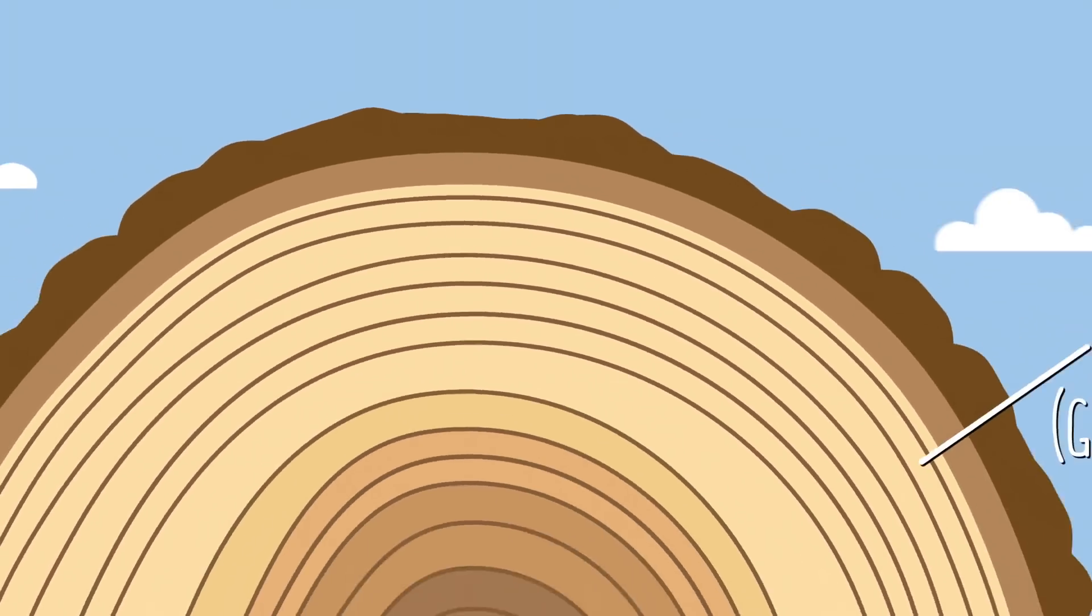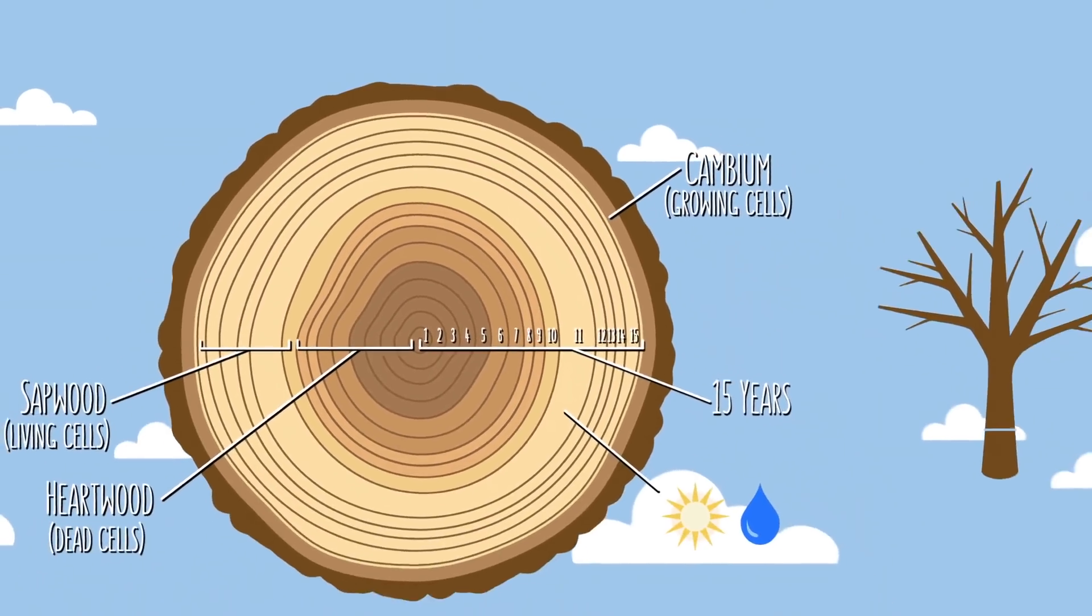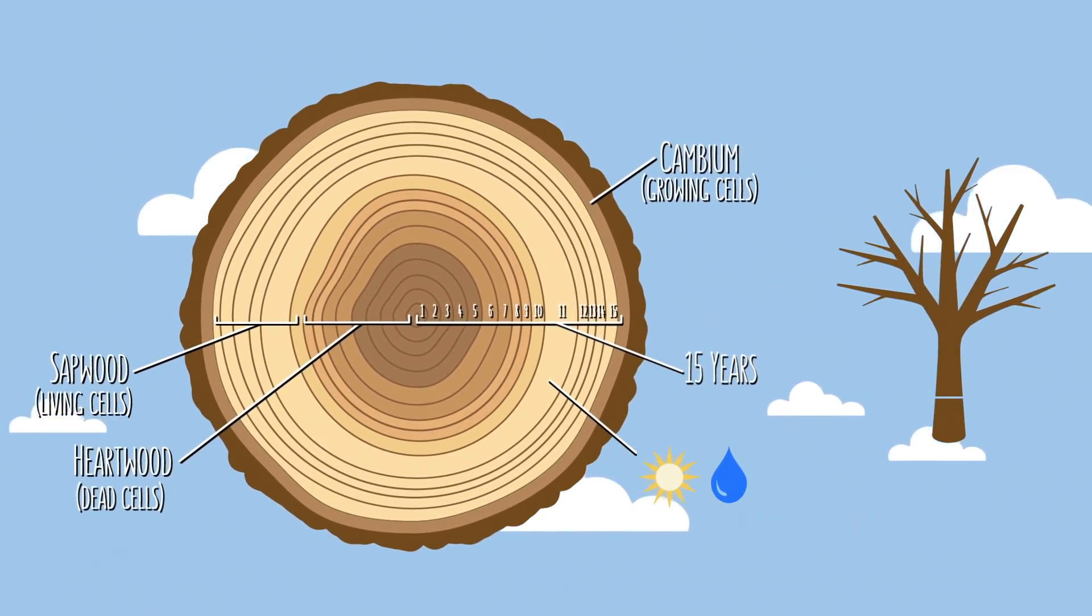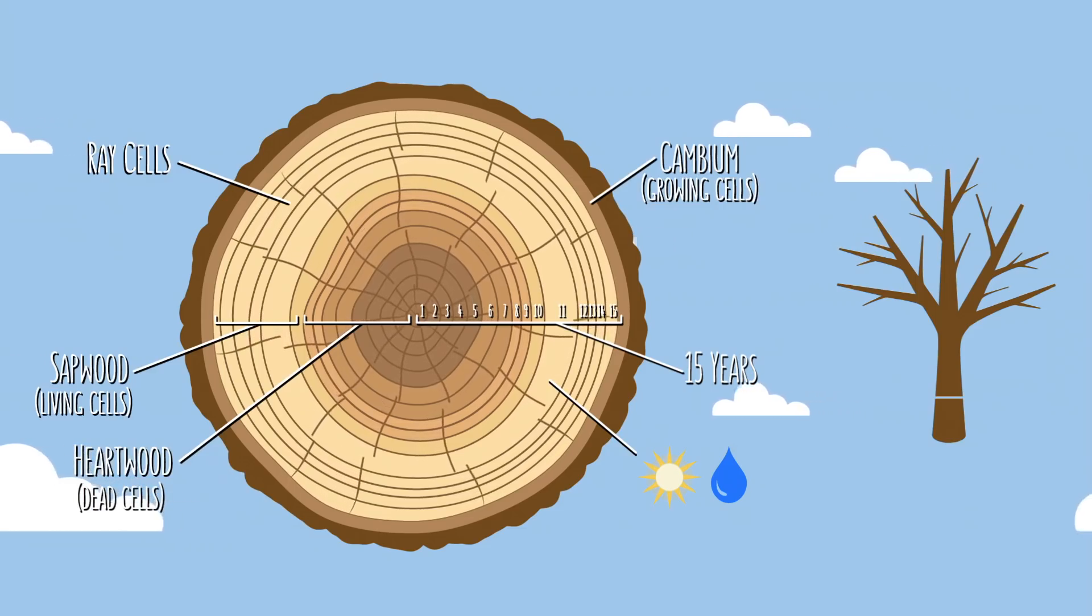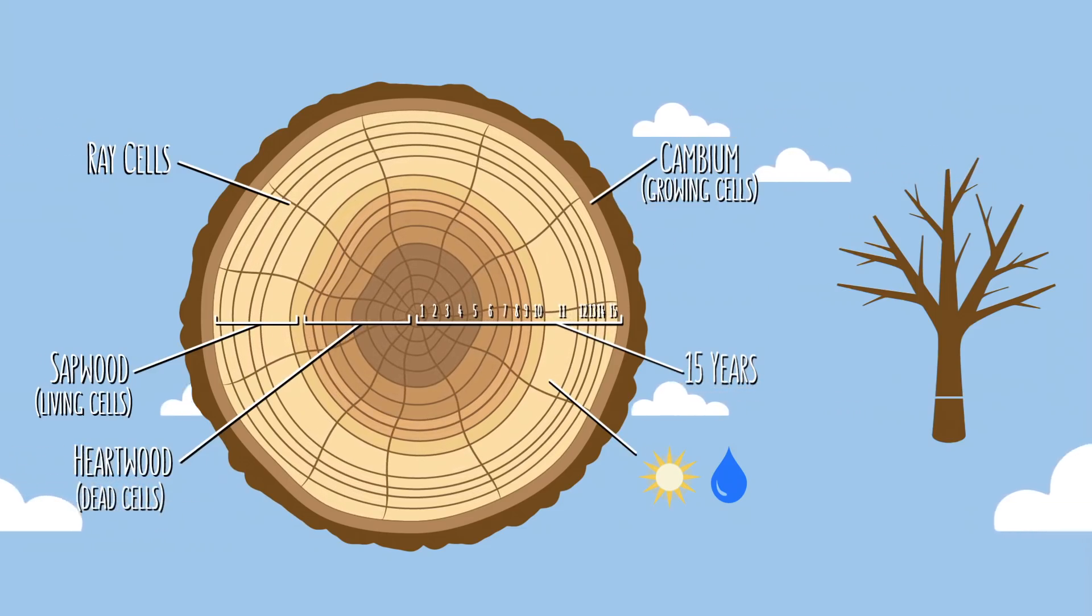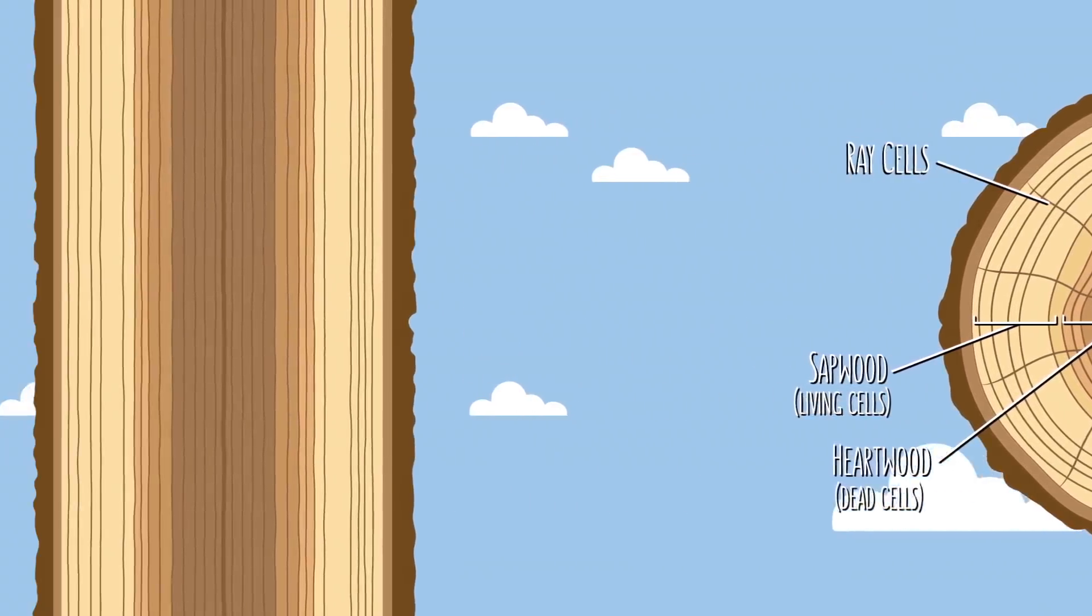Okay, so that's all of the relevant parts that you can see in a cross section. But there is one more important structure that I should mention as well. These are called the ray cells. And though they're not always visible to the naked eye, they extend out from the center of the trunk in varying lengths. But for our purposes, let's simplify them a bit and just say that they divide the rings into wedges, almost like the slices of a pie. Alright, I think that's enough anatomy for now.